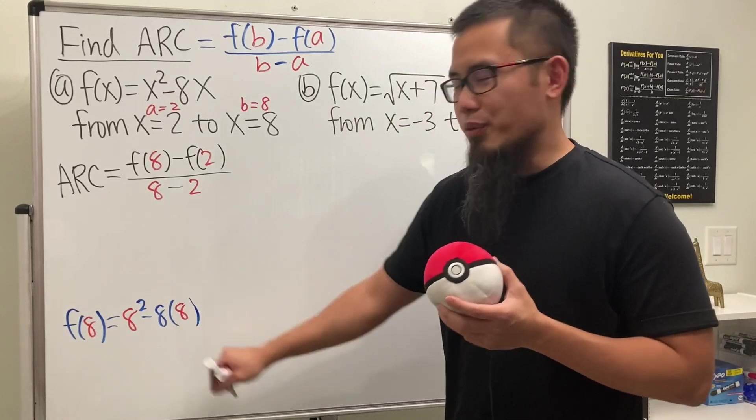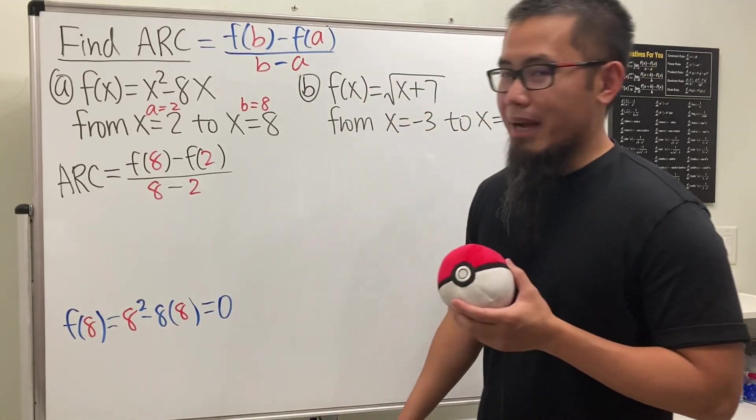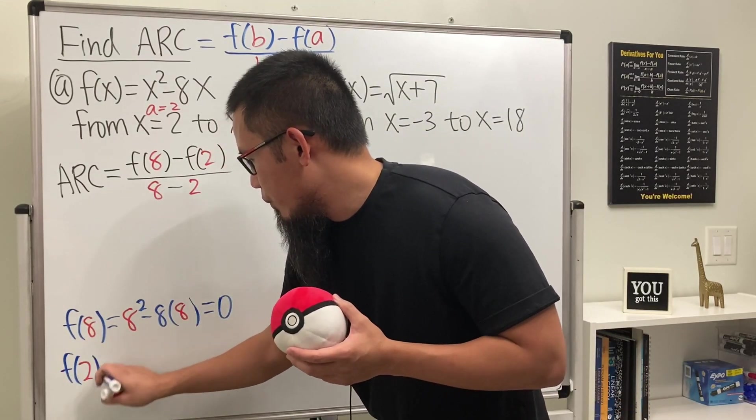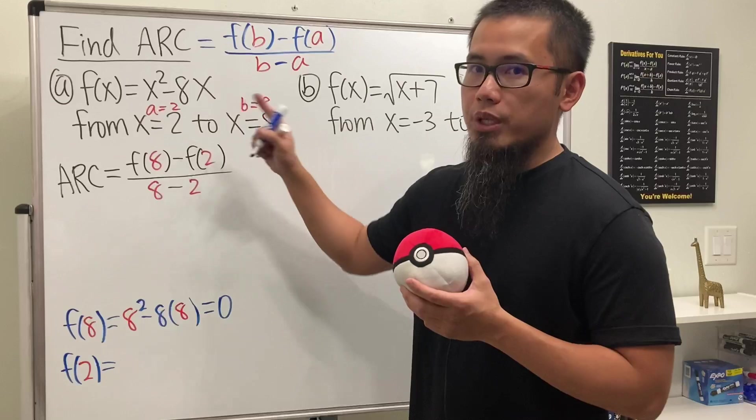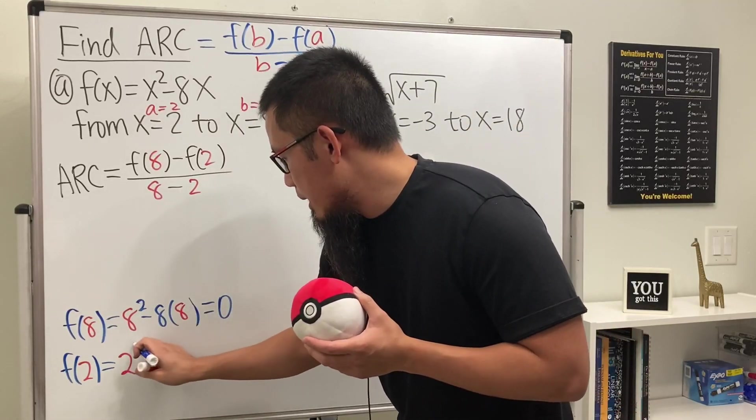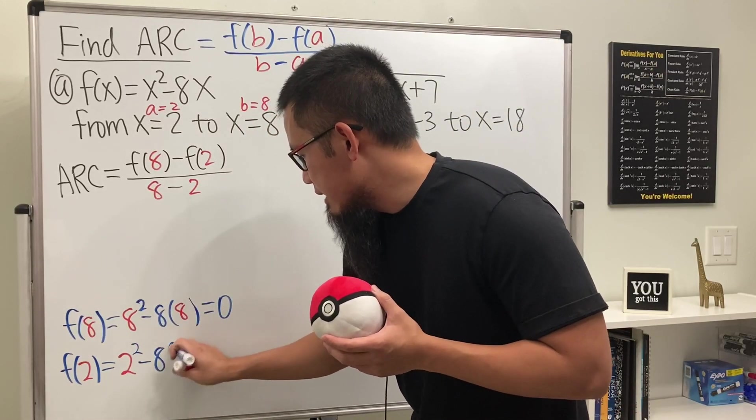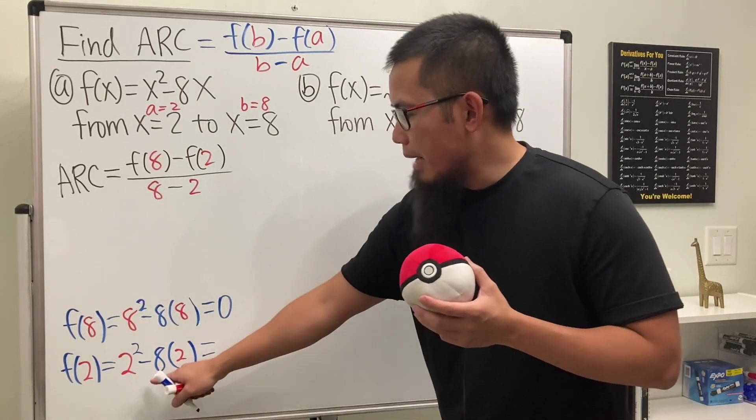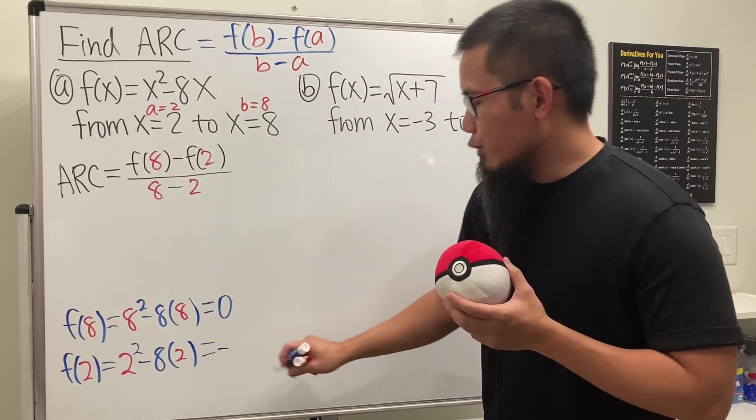Let's also compute f of 2 right here. We put 2 in here and here, we get 2 squared minus 8 times 2. Work this out, this is 4 minus 16, so we get minus 12.